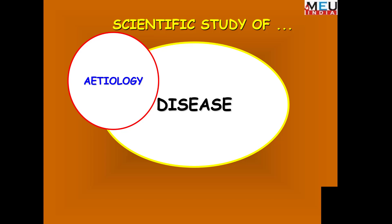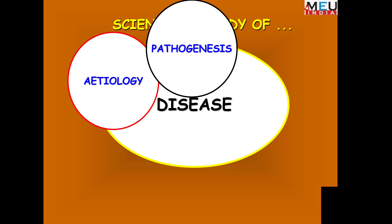A detailed study of disease means understanding its etiology — the causes. Every disease has certain causes: bacteria, viruses, changes in the genetic structure, tumors, changes in lifestyle, or other changes in the body. These factors result in a definite sequence of steps by which the disease develops.